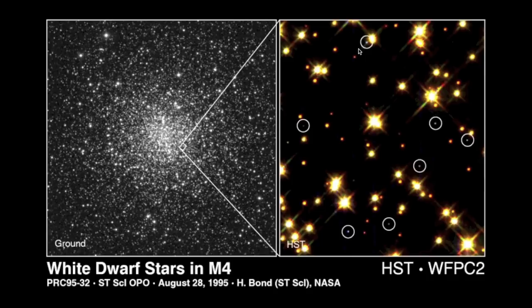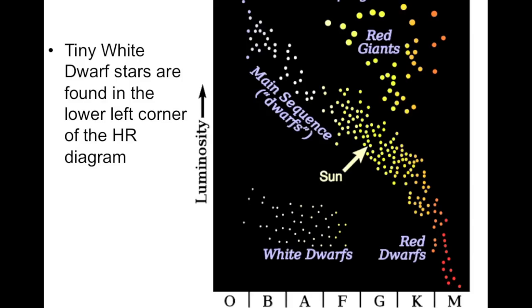White dwarfs are found in the lower left portion of the HR diagram. They're lower and to the left of the main sequence.